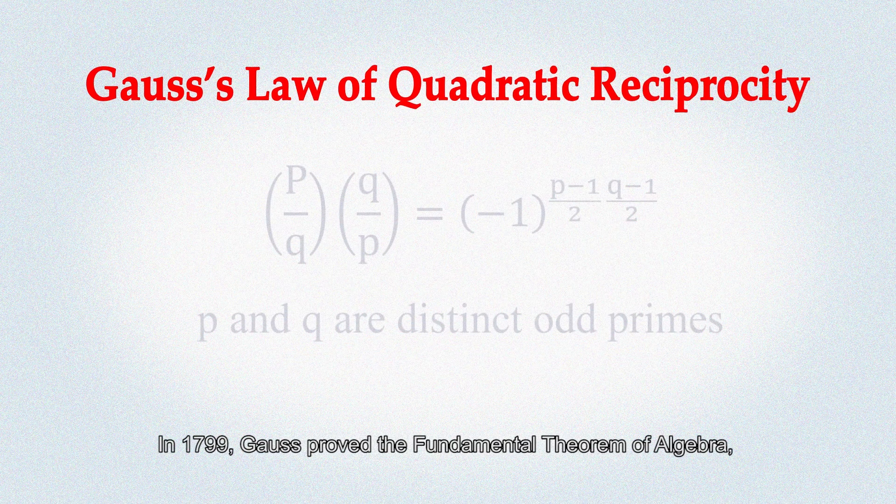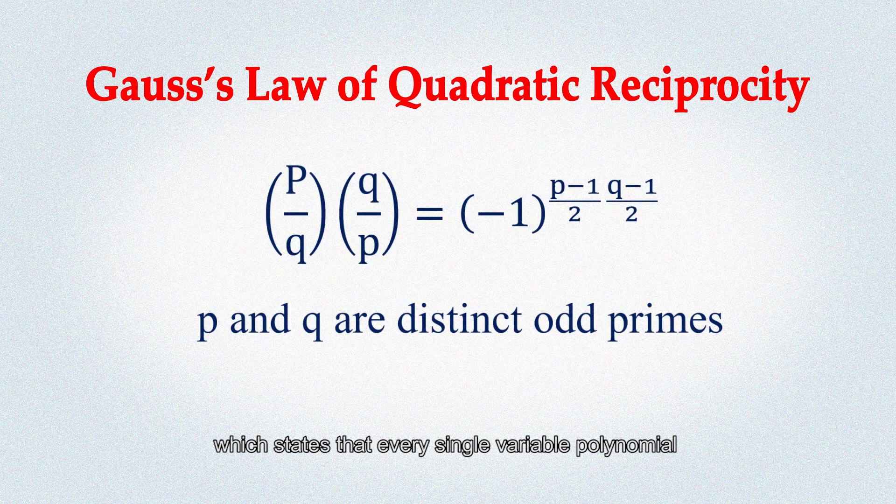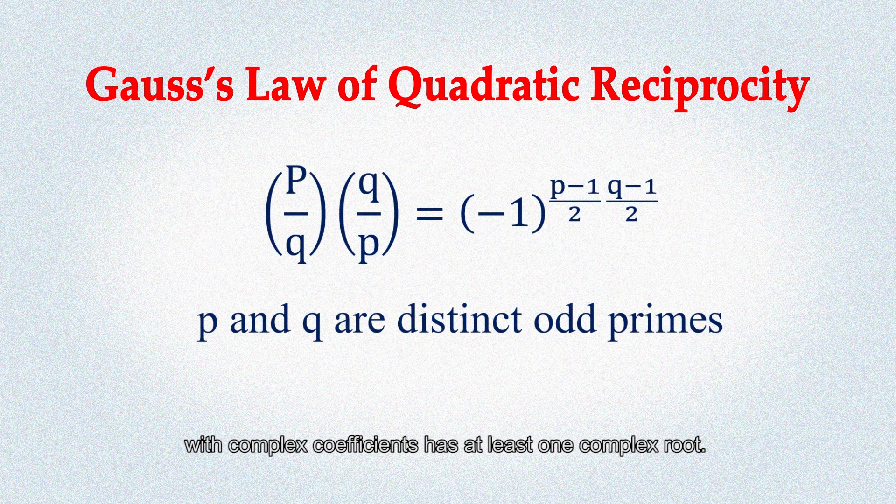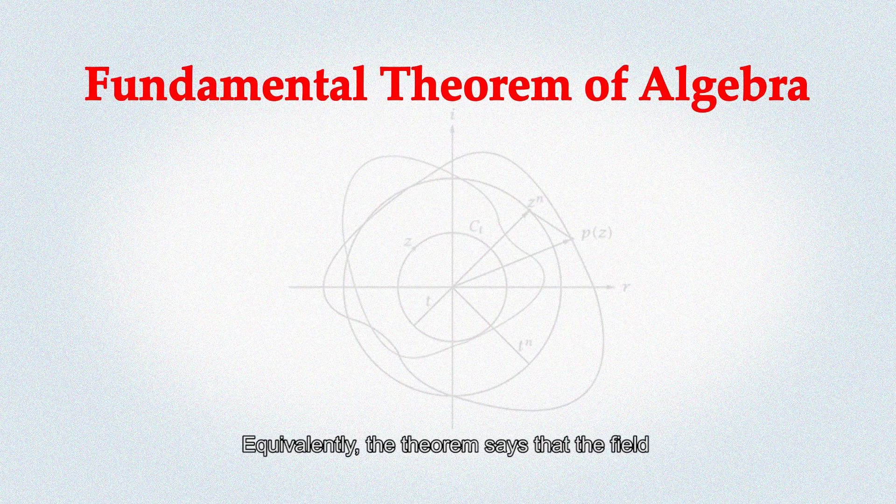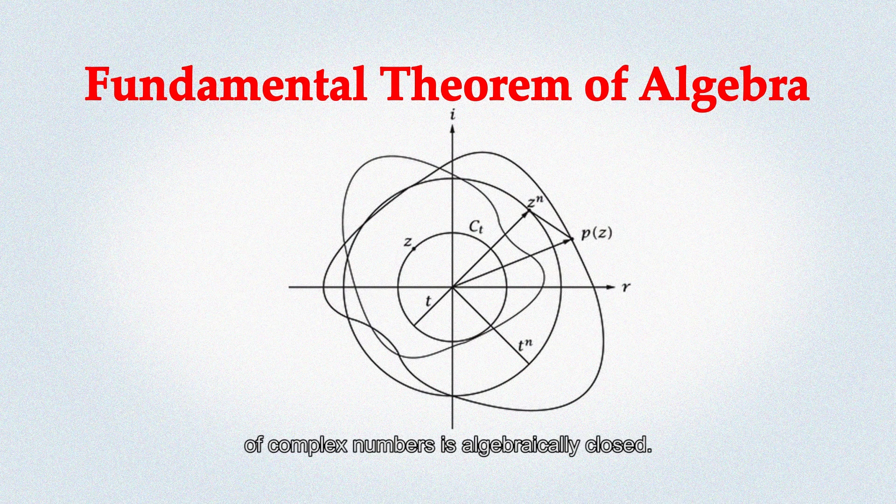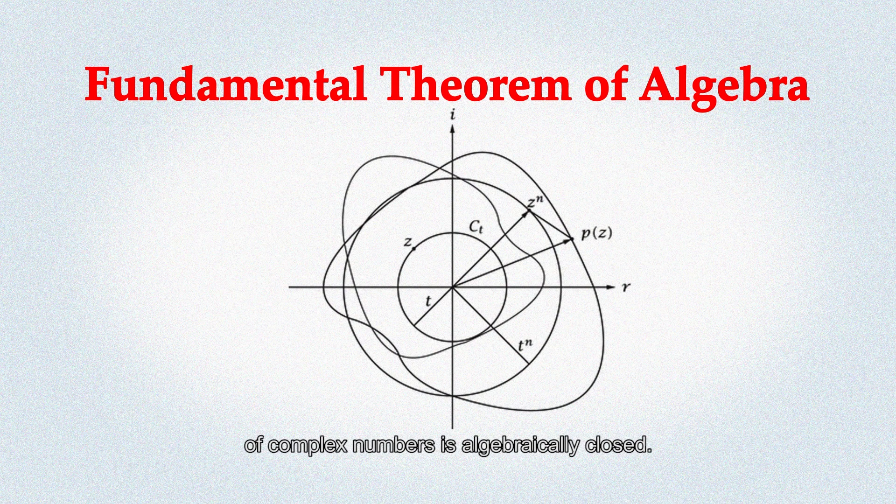In 1799, Gauss proved the fundamental theorem of algebra, which states that every single variable polynomial with complex coefficients has at least one complex root. Equivalently, the theorem says that the field of complex numbers is algebraically closed.